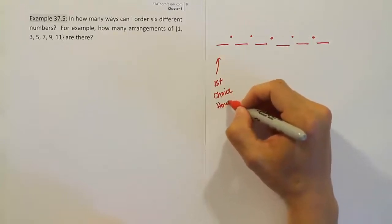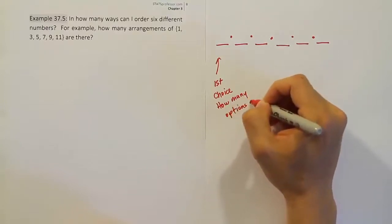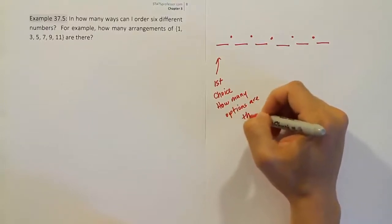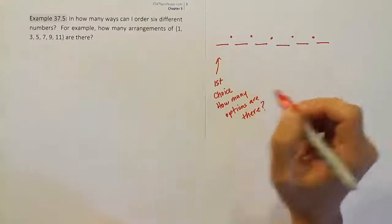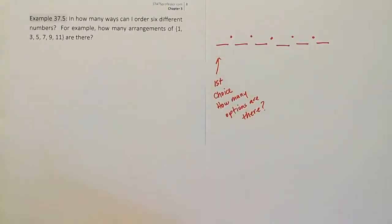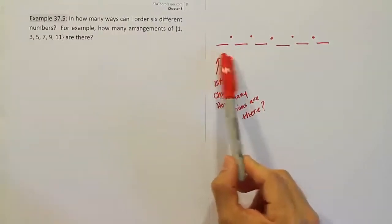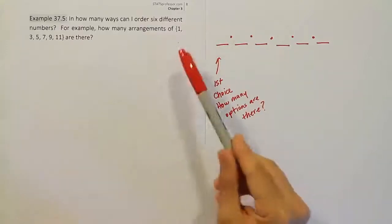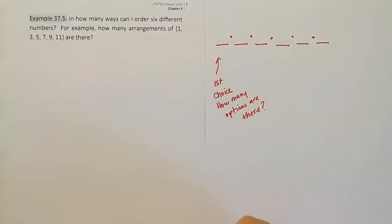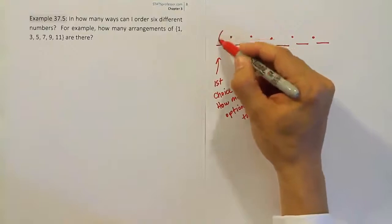How many options are there? So what we're asking is, how many numbers do I have to choose from that I could put in that position? Well, since it's the first number in my string of six digits, I can put any of these six numbers in there. So I'll have six choices for that first position.